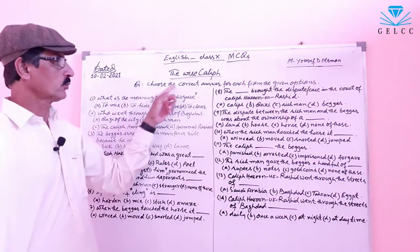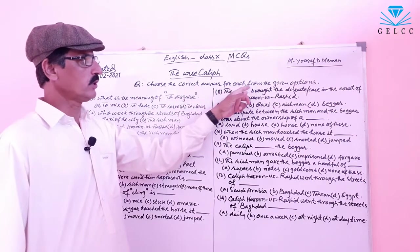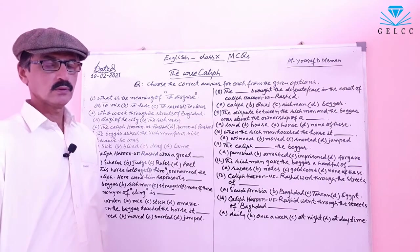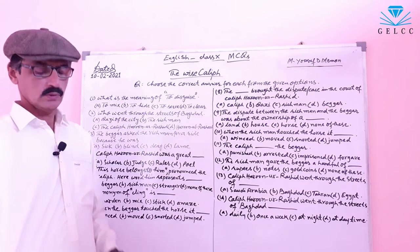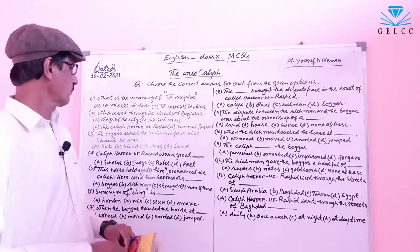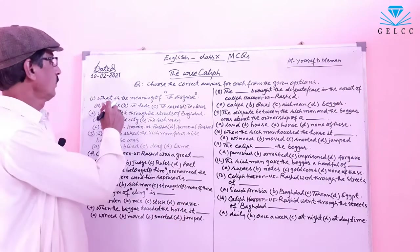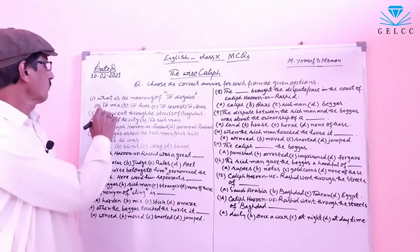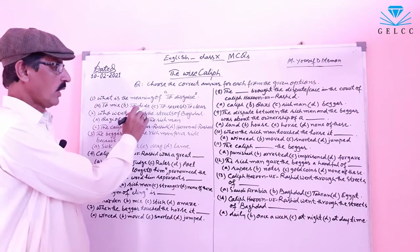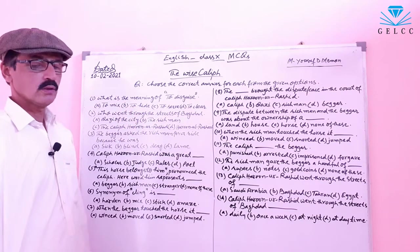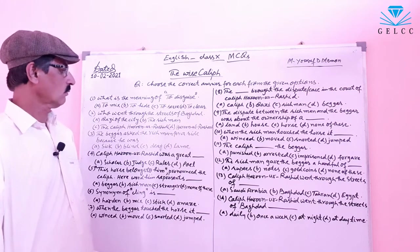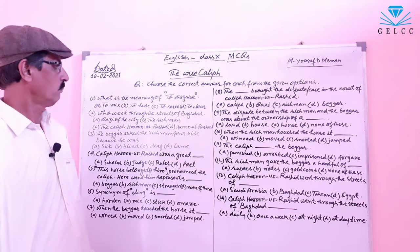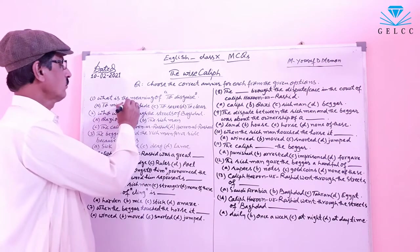Question: Choose the correct answer for each from the given options. There are 4 options for each statement. Number 1: What is the meaning of 'to disguise'? Option A: To mix. B: To hide. C: To serve. D: To clear. The correct answer is option B — to disguise means to hide.